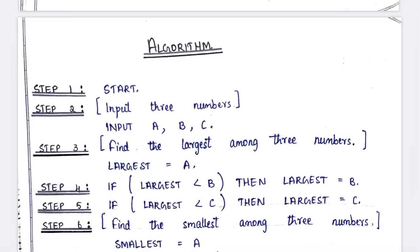Hello everyone, welcome to my channel. My name is Ashwini and today we are going to see the first BUC computer science lab program — algorithm and flowchart. Today's algorithm is finding the largest, smallest, and second smallest of three numbers. This is one of the lab programs, so let us see the question: write a program to find the largest, smallest, and second smallest of three numbers using simple if statements.